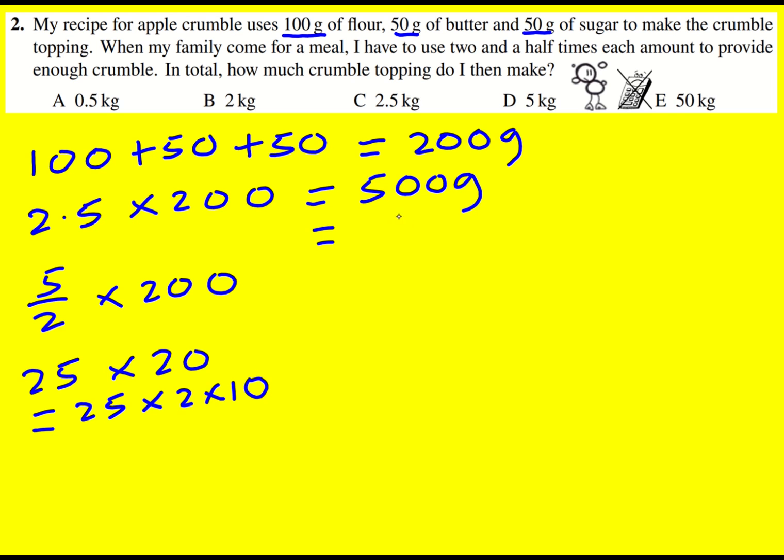To go from grams to kilograms we then divide by a thousand, so it's going to be 0.5 kilograms.